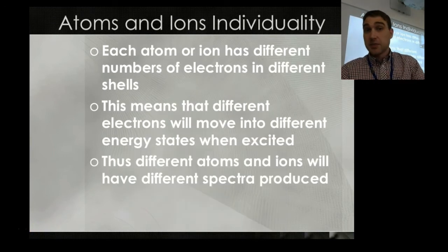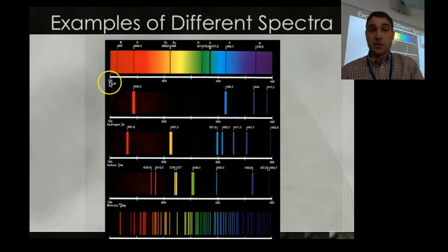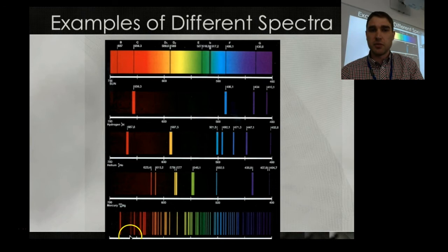Each atom or ion has different numbers of electrons in different shells, so what that means is you have different energy gaps all over the place, and that means that the electrons move into different energy states when they're excited. Because each atom or ion is different, that means that you're going to get different spectra being produced, different emissions of light. Here's an absorption spectrum from the sun. We can see particular energy gaps, and they match up with several different elements. Here we have hydrogen again, we can see that this band here, this emission spectrum, matches up with that absorption spectrum part of the sunlight. That tells us that there's hydrogen in the sun. Down here we have helium, and we can see that this one lines up perfectly with the absorption spectrum of the sun, so that tells us that there's helium in the sun, and so on.